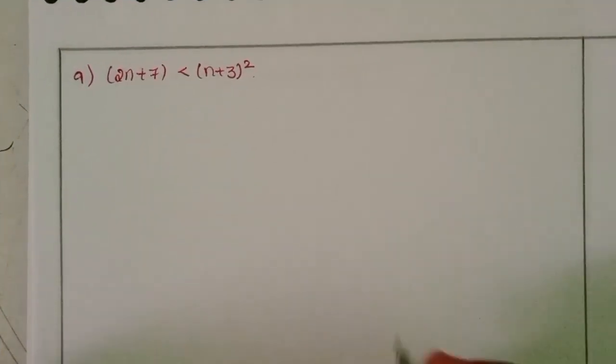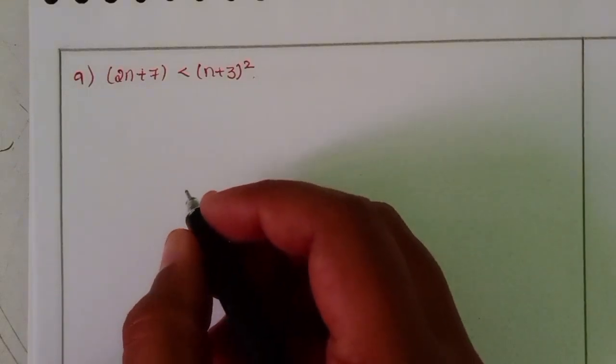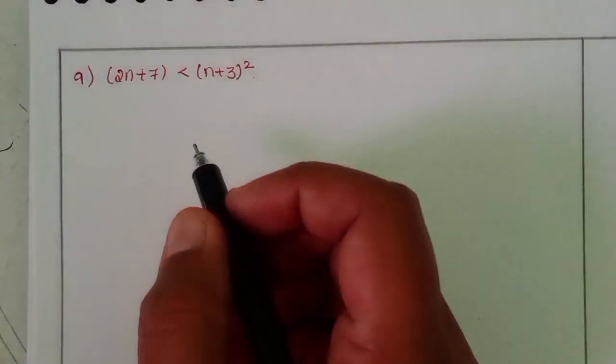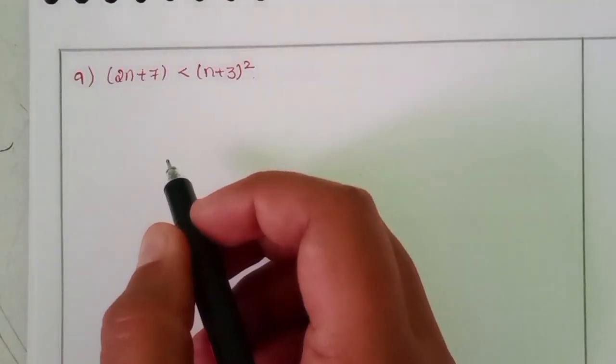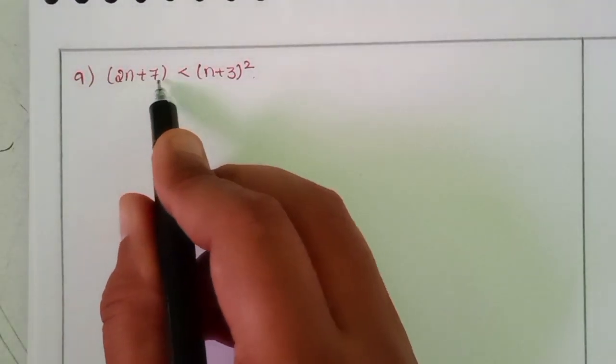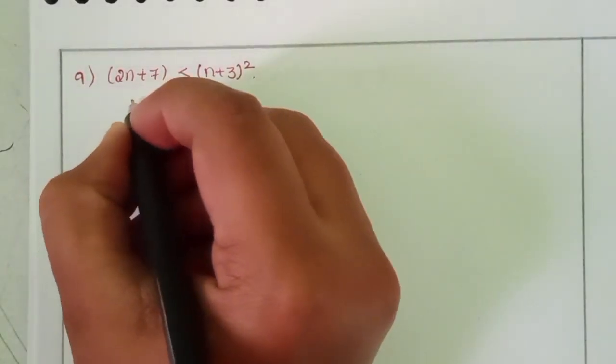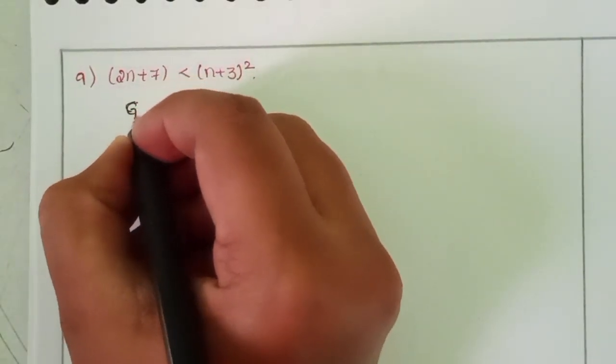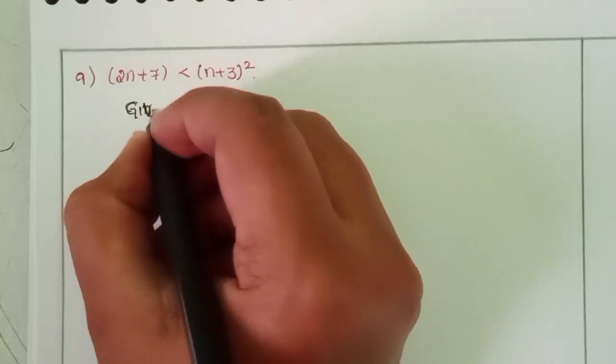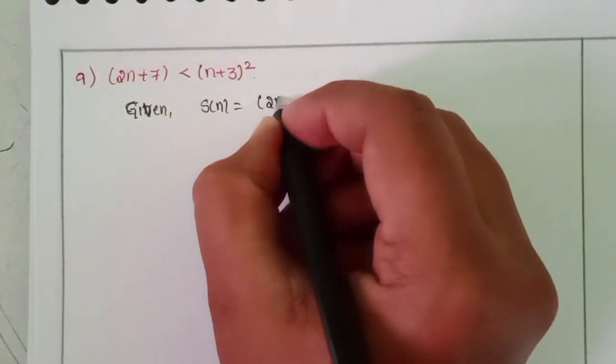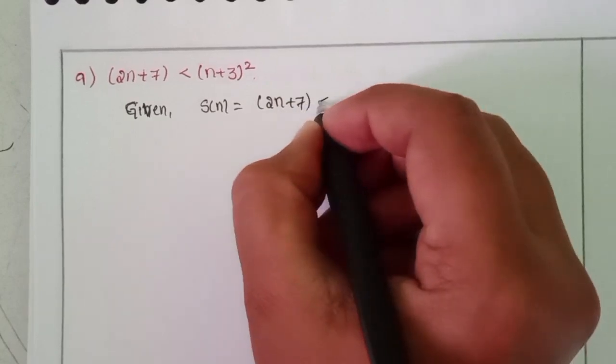Welcome back to our channel. Today we will discuss intermediate first year 1A chapter number 2, mathematical induction, exercise 2A, ninth problem. The problem is: 2n plus 7 is less than n plus 3 whole square. Let us take this as statement S(n). Given S(n) equals 2n plus 7 is less than n plus 3 whole square.